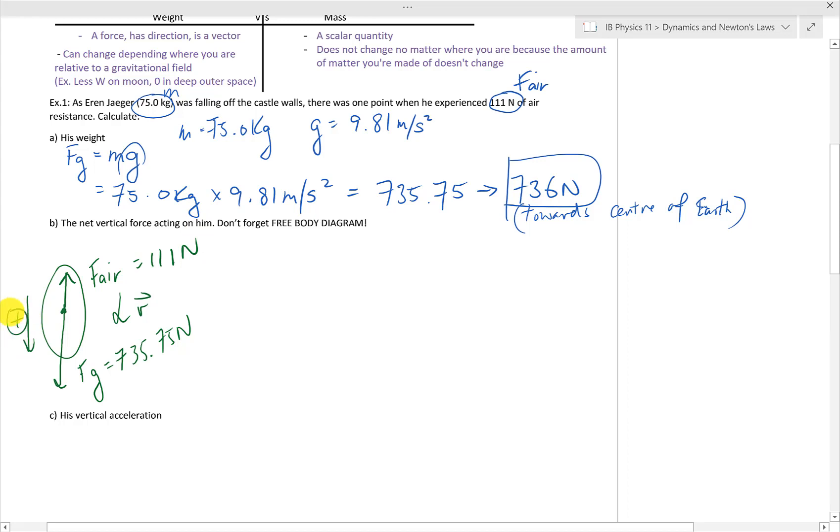I'm also going to label the downwards direction to be our positive direction. The reason why I like to do that, because Fg is greater than F air, just gives me a positive number to work with. So then the net vertical force acting on him is me looking along the vertical line and summing up the forces in that direction.